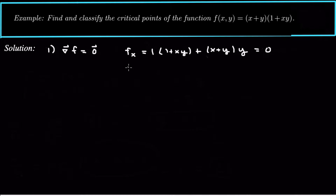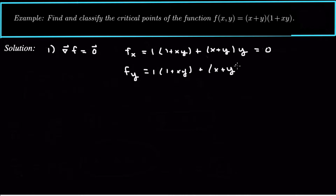And same thing for f sub y — set the derivative equal to zero, so differentiate with respect to y. We get one times one plus xy plus the first x plus y times the derivative of the second with respect to y, which is just x.